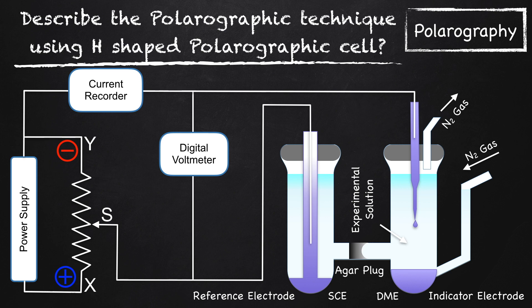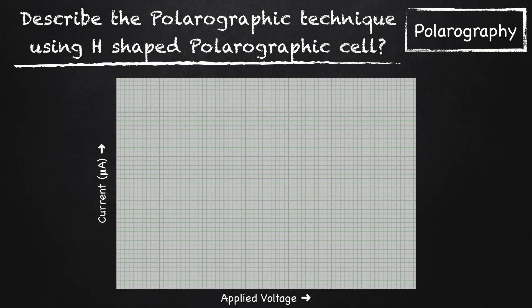Close the circuit and keep the jockey S on X position. For this position, find out the reading of voltmeter and galvanometer. Move the jockey from X to Y slowly, and for each position take the readings of voltmeter and galvanometer. Now, plot a graph of current versus applied voltage.